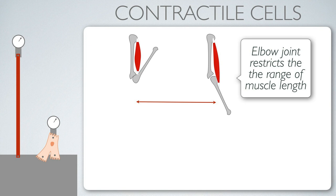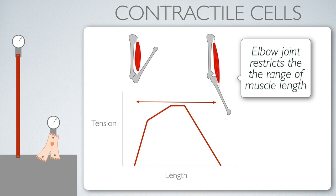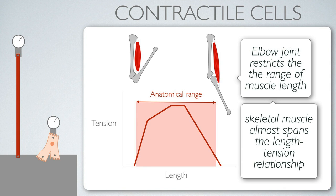The elbow joint restricts the range of muscle lengths that are achieved. When we look at the length-tension relationship for muscle, as measured in an isometric experiment, we get a characteristic curve. The elbow joint allows almost this full range of changes in length by the muscle fibers within the biceps muscle — we call that the anatomical range, because it's a function of the range of length changes your anatomy allows in vivo. For skeletal muscle, the geometry of the skeleton and muscle attachment points allows length changes that almost span the full length-tension relationship.